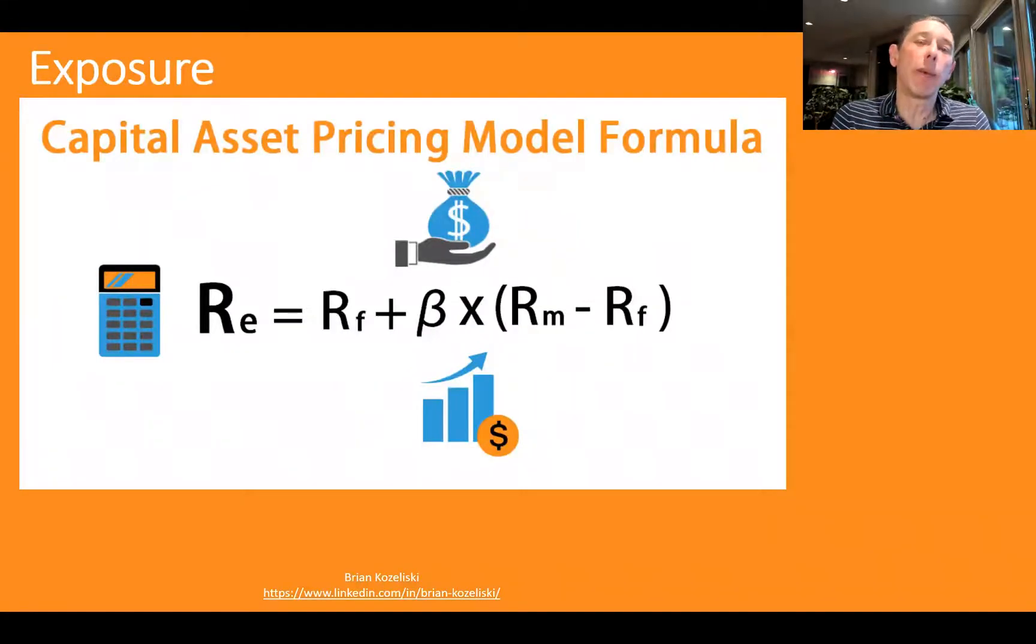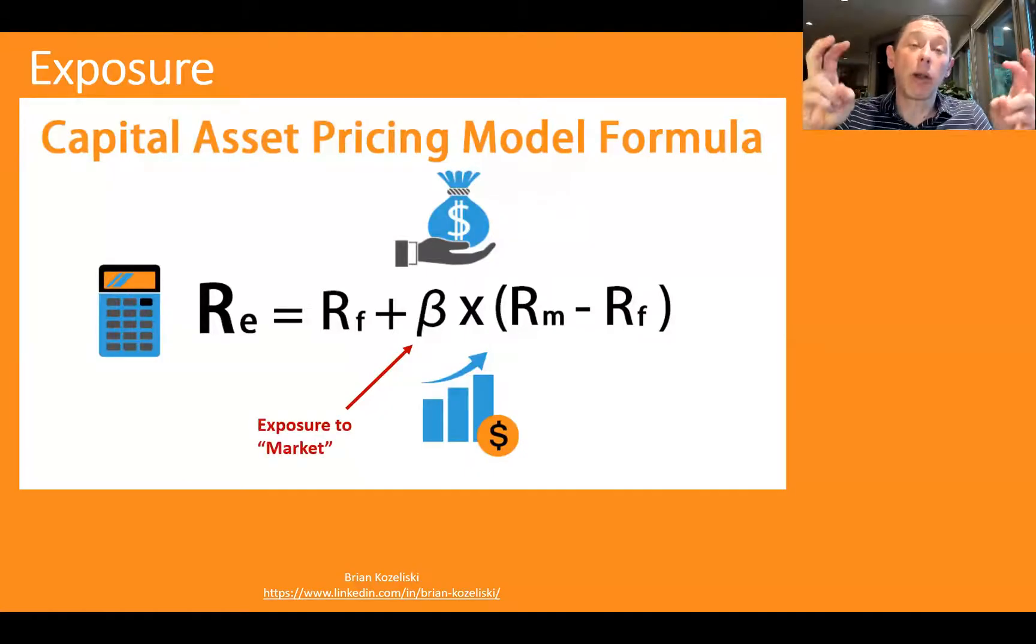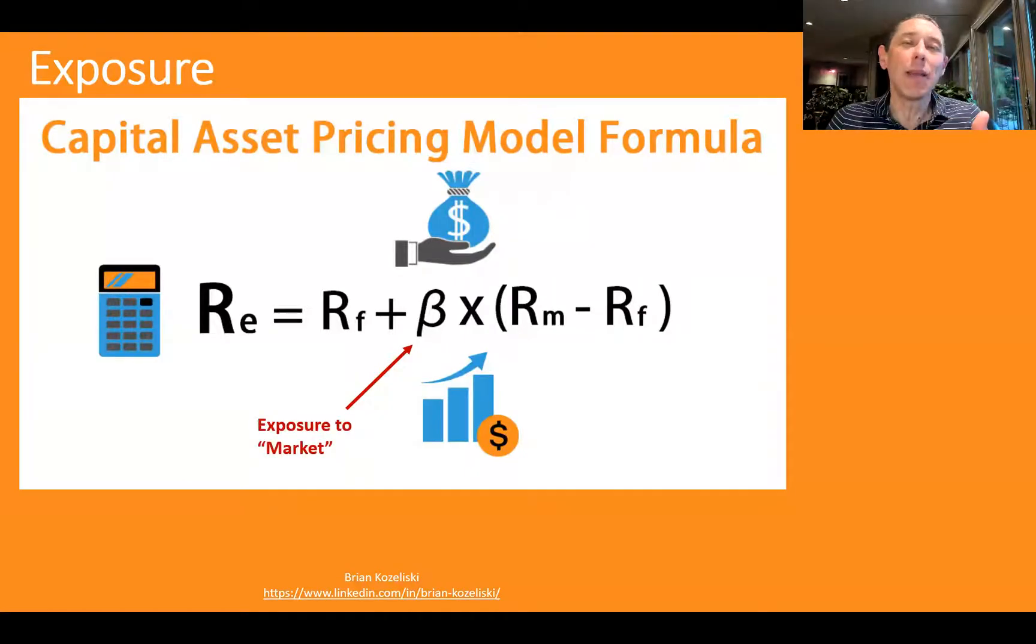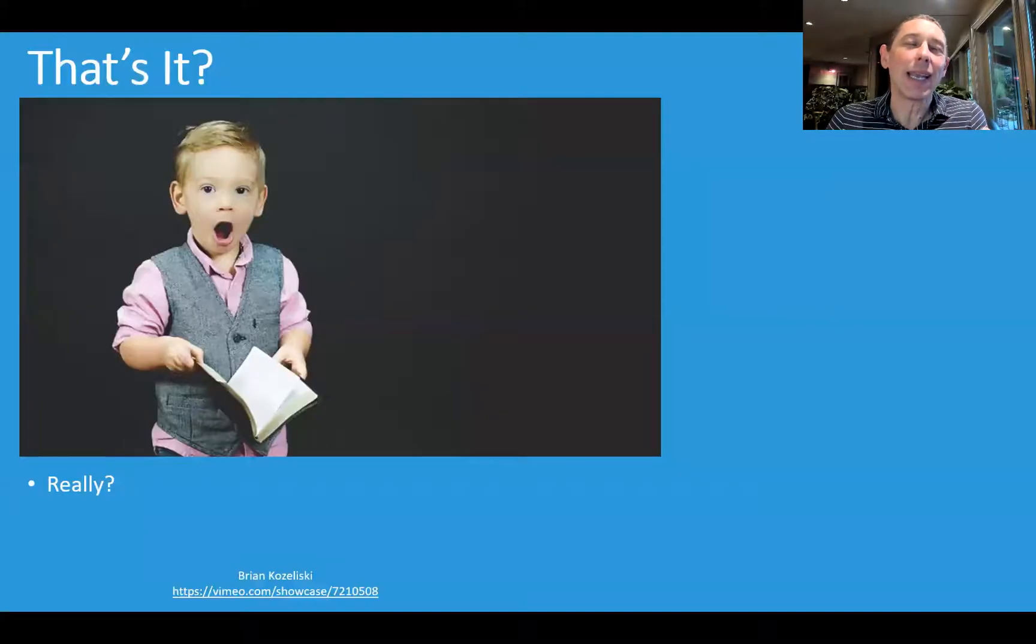Let's refresh our memory in terms of CAPM. The important thing to remember here is that there's this beta, and that represents an exposure to the market. And that's kind of it. That's the only thing that matters. But I don't think that's particularly realistic. I think you could think of a number of things that would impact asset prices.